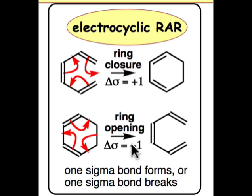The bottom case is the exact reverse of the top case. Here, we have a loss of a σ bond. There's a cyclic ring system that opens up to form a linear π system.